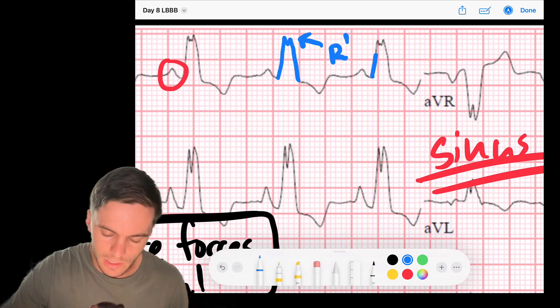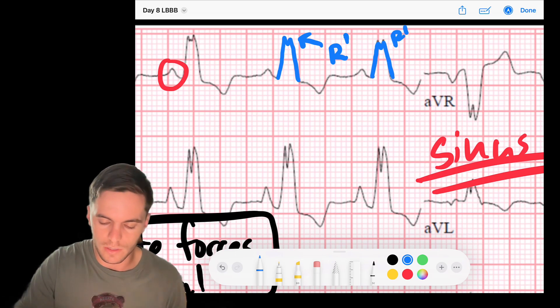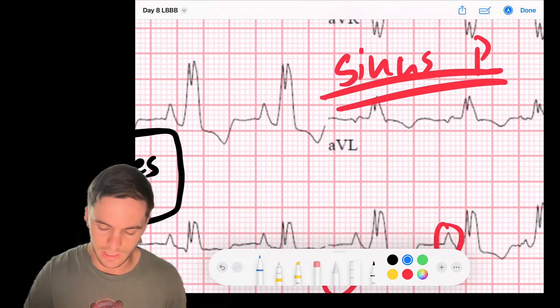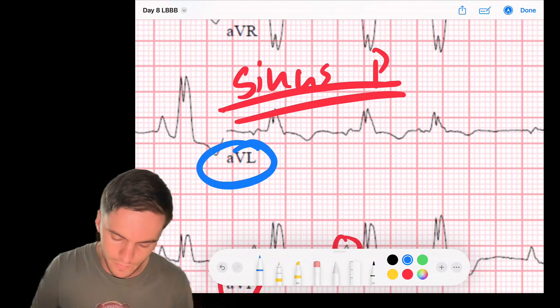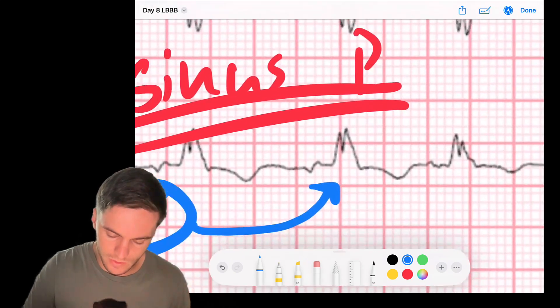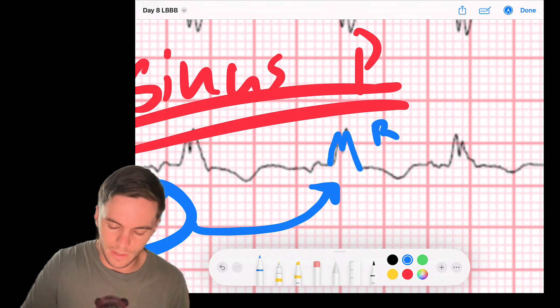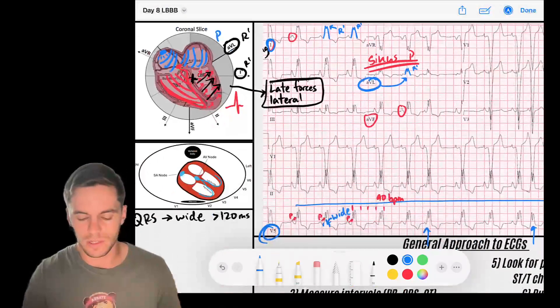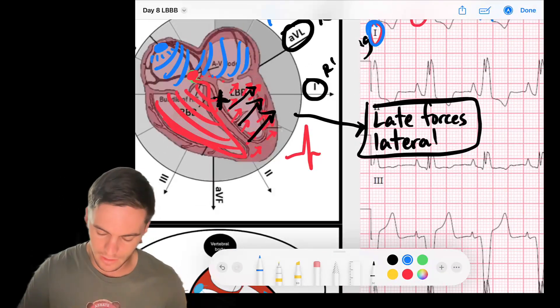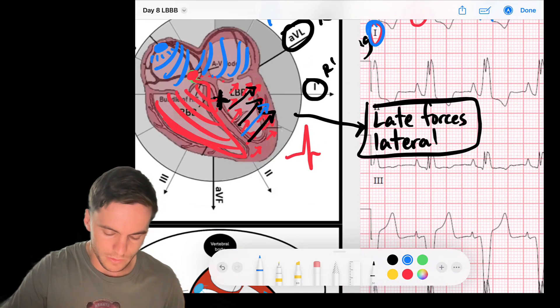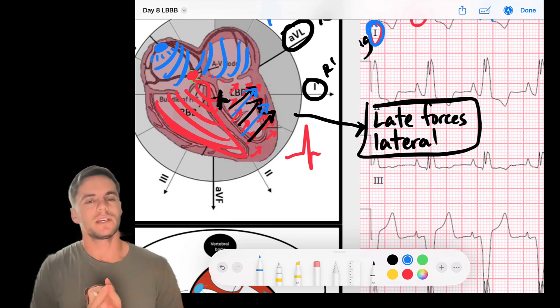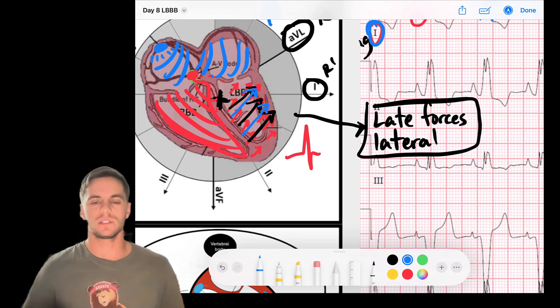So that is late positive forces heading towards lead 1. And then we can also look at lead AVL here. And notice if I look at the QRS complex, you see I've got, it goes up, it's trying to come back down like it usually does, but then it gets this last R prime type of force that is indicative of late forces heading in that direction. So later on in the QRS, that's actually kind of what we would say is the cause of the widening of the QRS is that late slurry force as it's trying to head towards the left side.